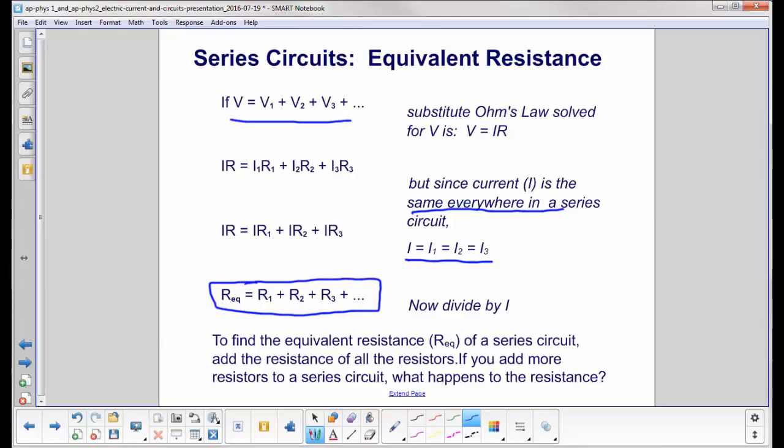We now have the equivalent resistance of a series circuit is just adding up the individual resistors. What happens if you were to add more resistors to a series circuit? What would happen to the resistance? Well, any number I add here on the right side is clearly going to make the equivalent resistance greater.